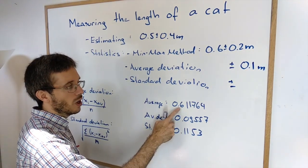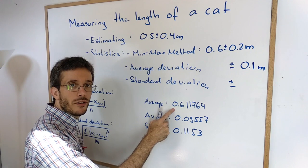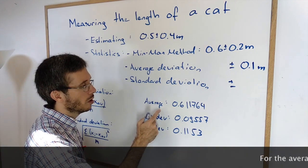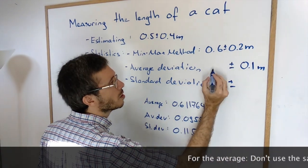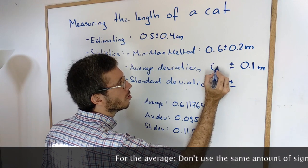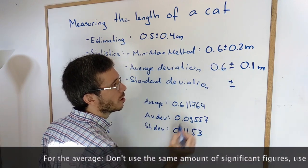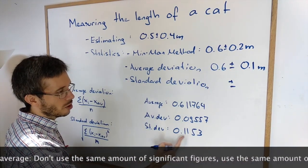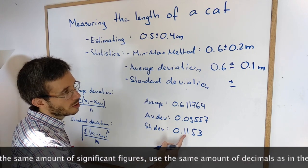And as the main value I take the average itself with the same number of significant figures. So in this case 0.6. And for standard deviation I do the same thing. I round it to 1 sig fig. So plus minus 0.1.